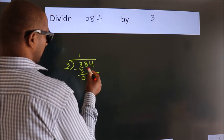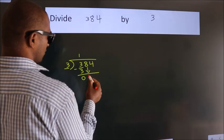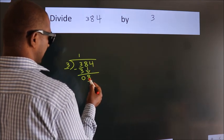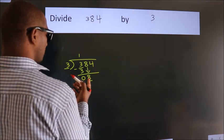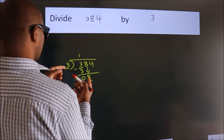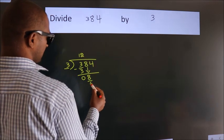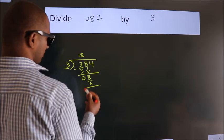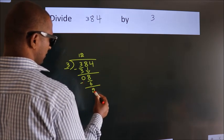After this, bring down the beside number. So, 8 down. A number close to 8 in 3 table is 3 twos is 6. Now, we subtract. We get 2.